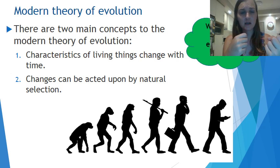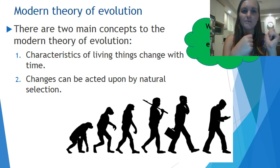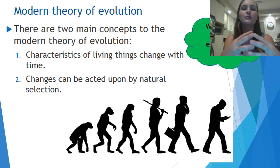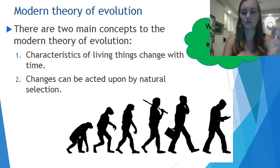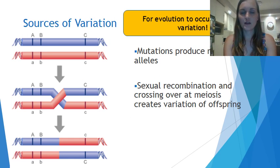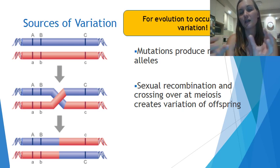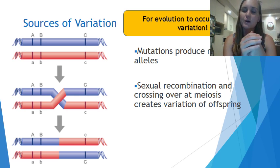What you need to start thinking about is what is required for evolution to occur. Characteristics of living things change with time, but what factors or processes need to occur to cause changes in these organisms? The answer comes down to sources of variation — for evolution to occur, you need variation.